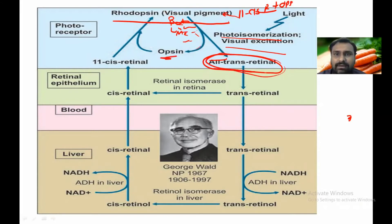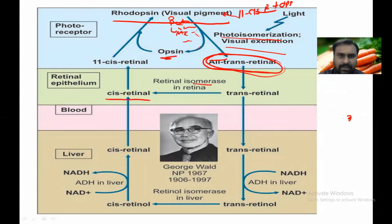Now this 11-trans retinal in the retina, with the help of isomerase enzyme, is converted to 11-cis retinal and binds with opsin to resynthesize the rhodopsin.